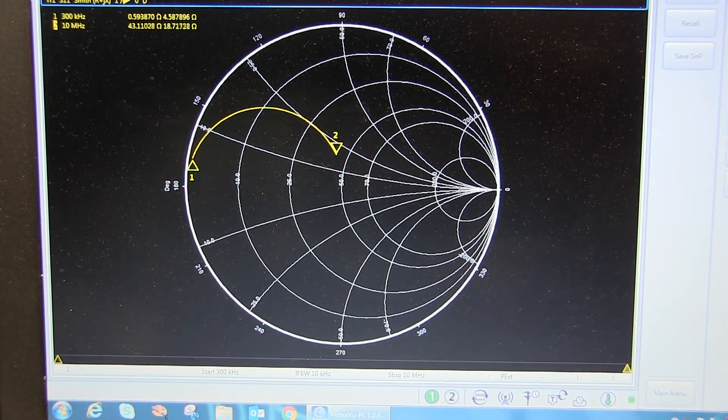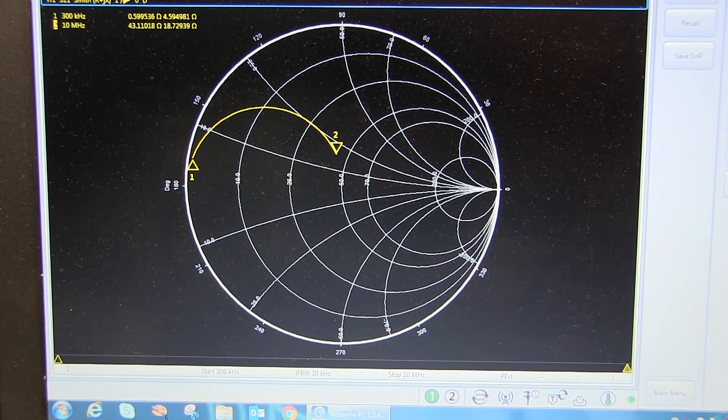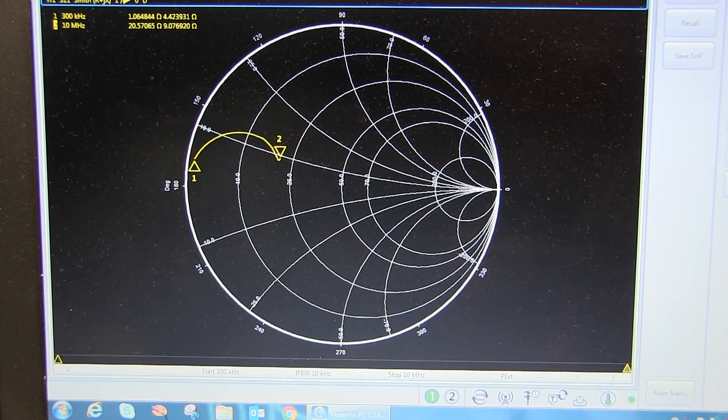And again, if we adjust our load resistor, instead of being 50 ohms, we can actually see how we're going to be tracing around other constant conductance circles other than the 1 over 50 ohm conductance circle.